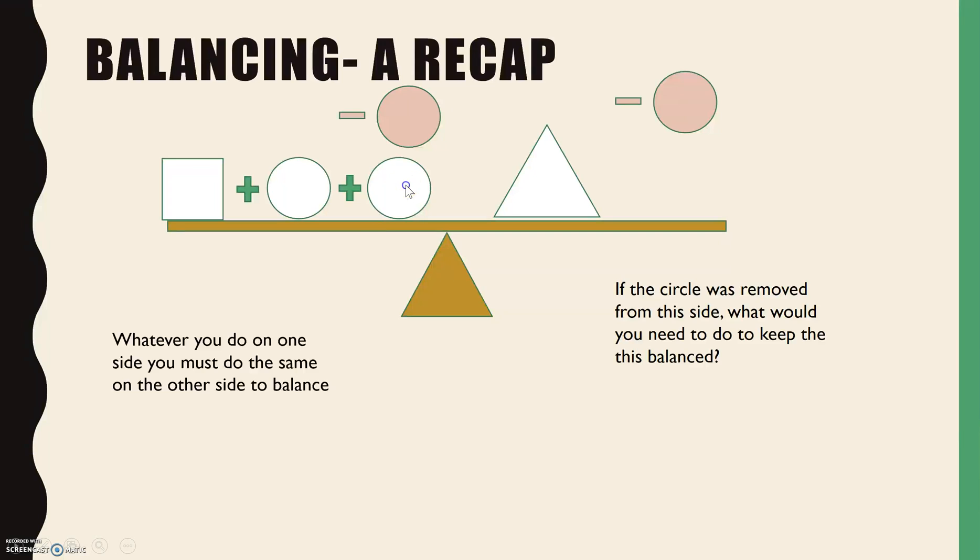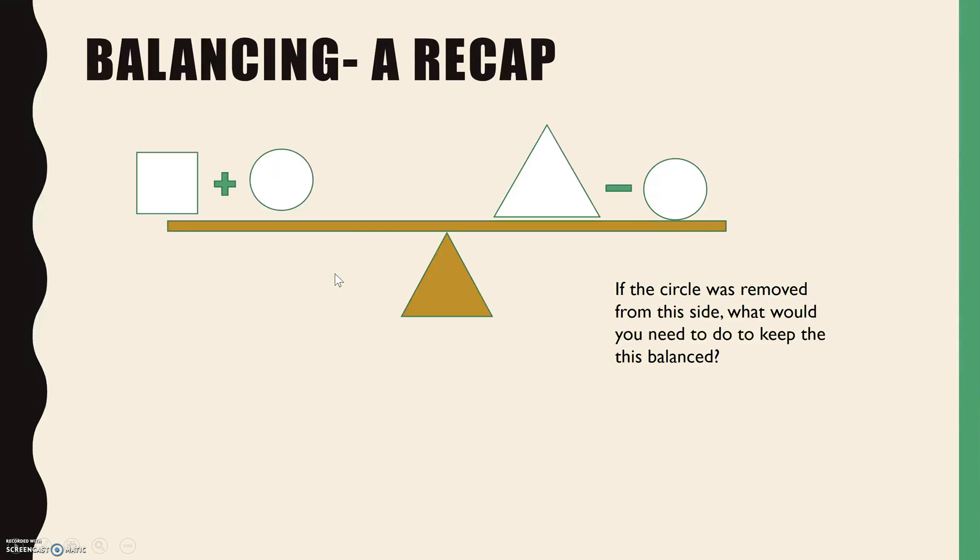So that then means we lose that circle and we'll lose one circle on this side, and now it's balanced. Another example, this time similar but to get rid of this minus circle: same idea, whatever you do on this side you have to do the same on the other. To remove this negative circle we need to add a positive circle to cancel out those two signs. That means we also have to add a circle onto the other side to keep it balanced.